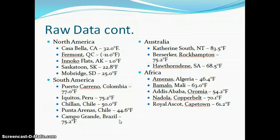For South America, we got 77.0, 75.2, 50, 44.6, and 75.2 degrees Fahrenheit. In Australia, we decided to only take three data points because it's much smaller compared to all of the other continents and it's really only one country. So we got 83.5, 75.2, and 68.5 degrees Fahrenheit. In Africa, we got 46.4, 63.0, 54.2, 70.1, and 61.2 degrees Fahrenheit.